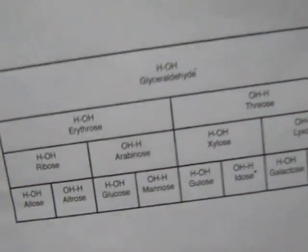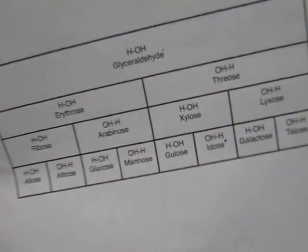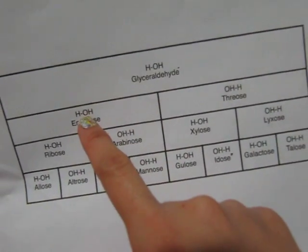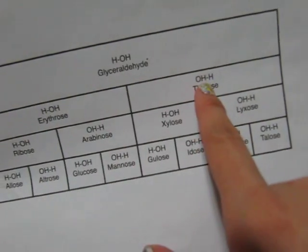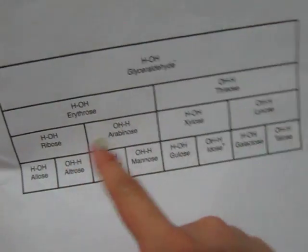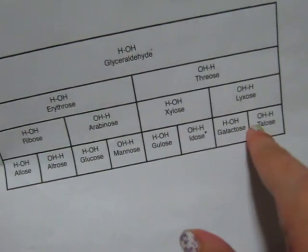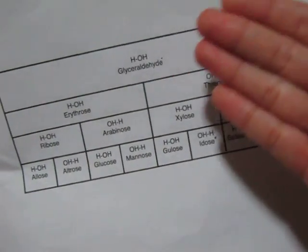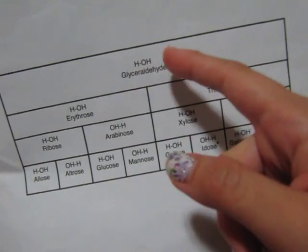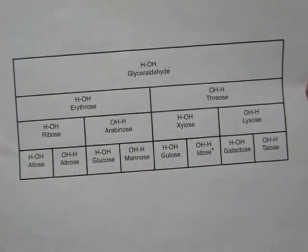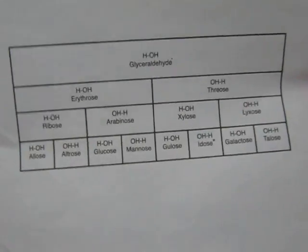All you have to remember is that there is this pattern on the very top chiral carbons, where the OH flips to the other side, and the same pattern goes down. Just figure out a way to memorize the names, and you're good to go. All you have to remember is that it just builds up from glyceraldehyde. Thanks for watching and I hope this helps you.